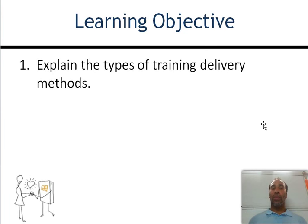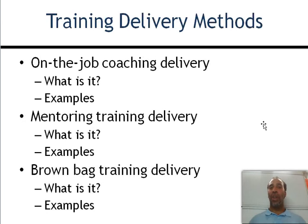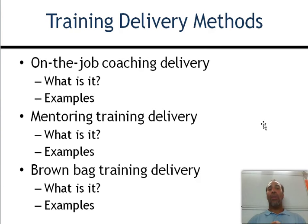Another learning objective is to explain the types of training delivery methods — how is that training going to get to you? You have on-the-job coaching, which is exactly as it sounds. Some jobs only do on-the-job training because the only way you can learn is to sit down and learn it with someone who can already do it.